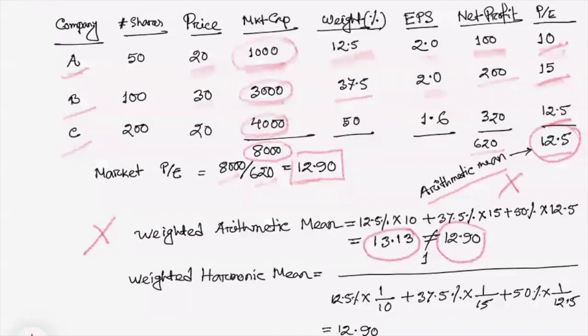So how can we come up with the right market price-earning ratio? It can only be calculated using the harmonic mean because the data are represented as a ratio—price-earning ratio. So we have to calculate the weighted average harmonic mean. To calculate weighted average harmonic mean, we need to multiply the respective weight by the reciprocal of the P/E ratio, which is 1/10 times 12.5, 1/15 times 37.5, and so on. And then we have to take the reciprocal: 1 divided by this number. And this number should come up to 12.9, and this is the average price-earning ratio of the market.